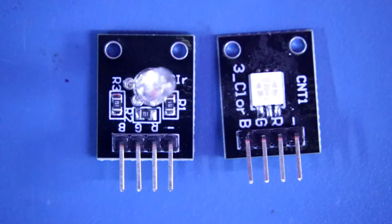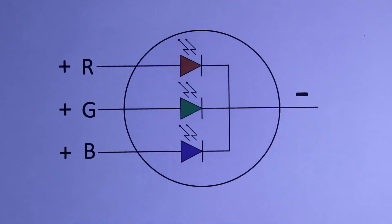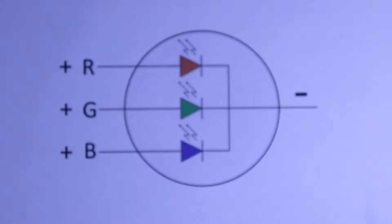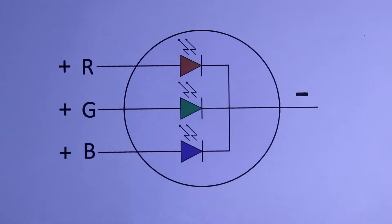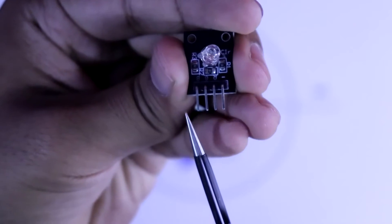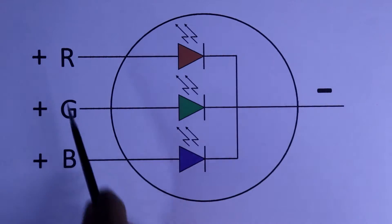Inside this, it has 3 little LEDs: red, green and blue. And these are connected in this way. This is the whole package, and inside this, these 3 LEDs. One negative and three positive. One negative and three positive.